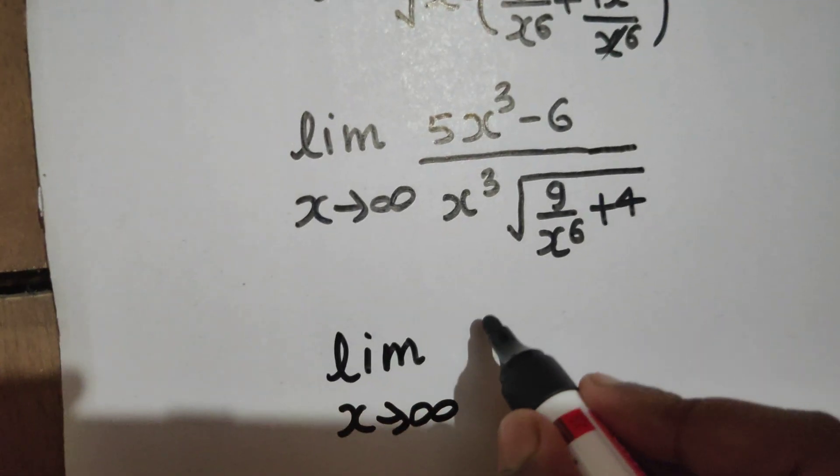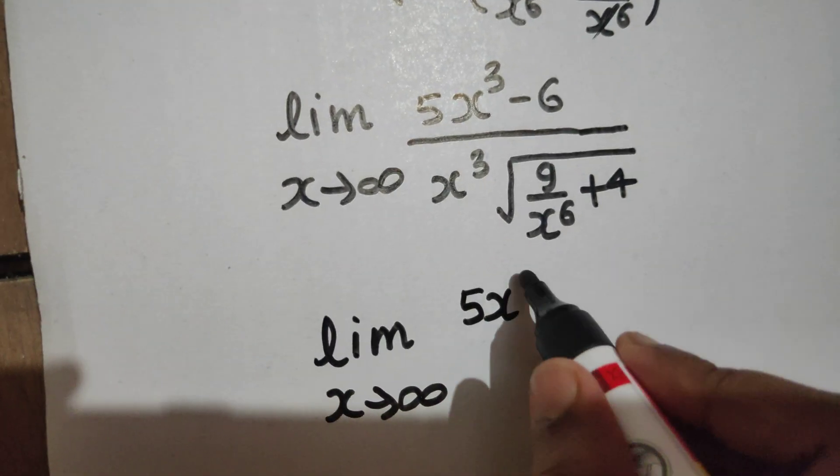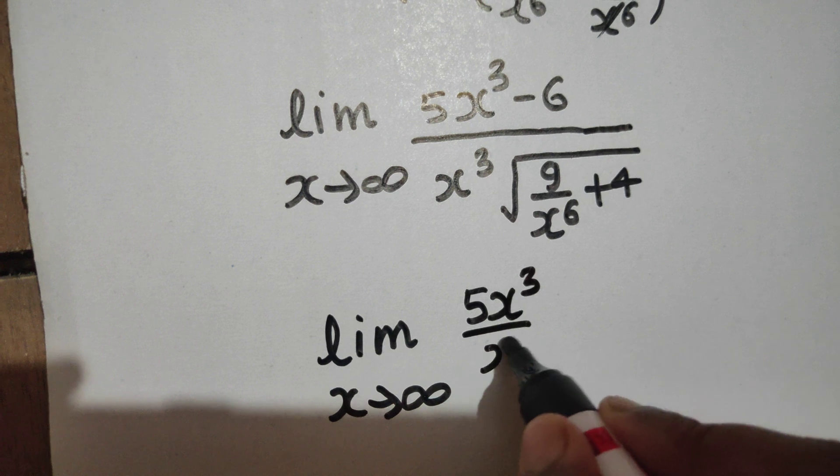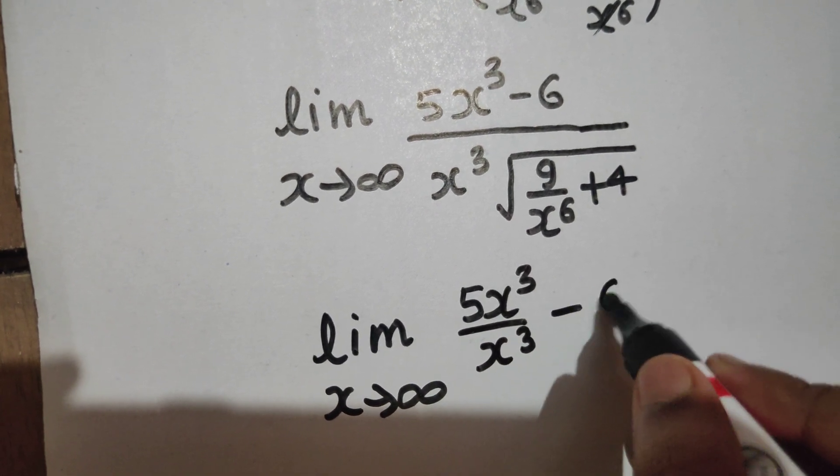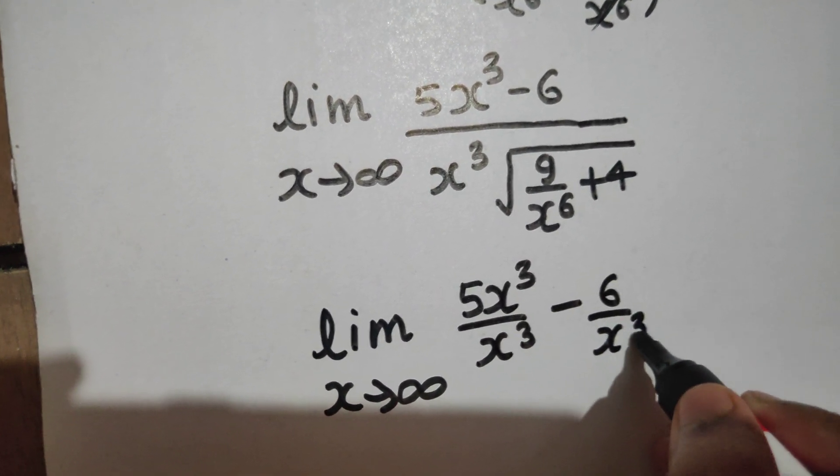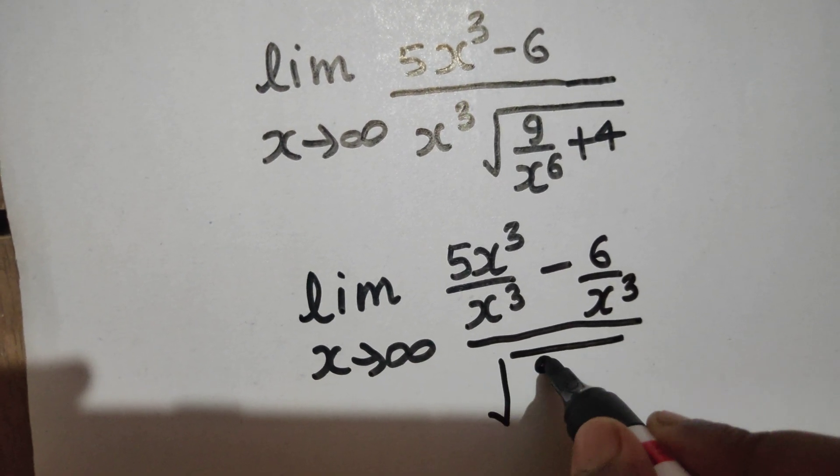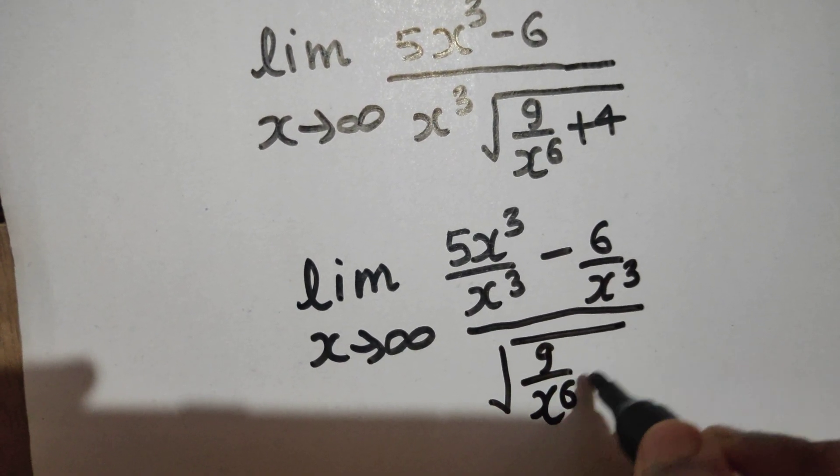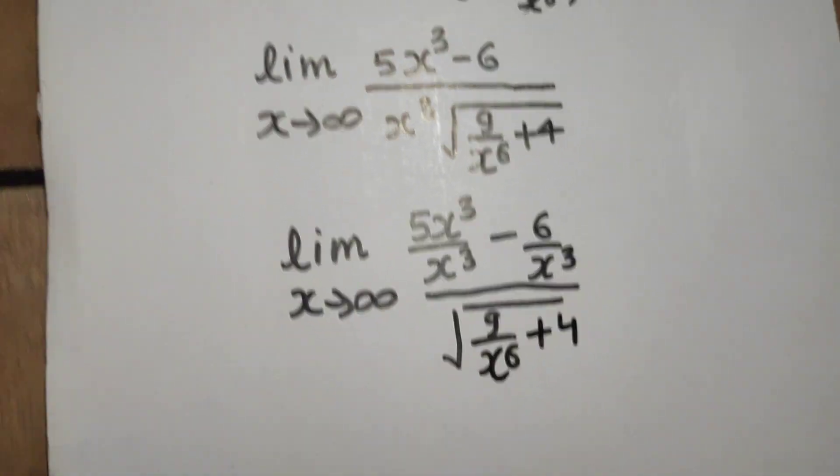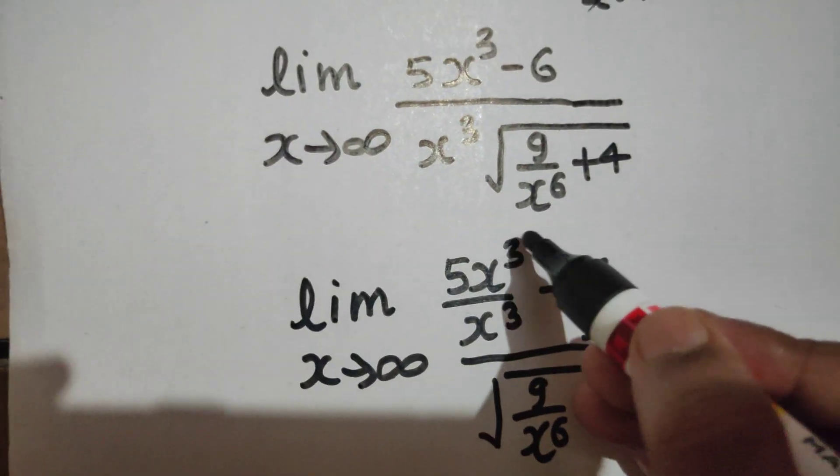That's what I wanted, because next step this can be cancelled and I am left with limit x tending to infinity: 5 - 6/x³ divided by √(9/x⁶ + 4).